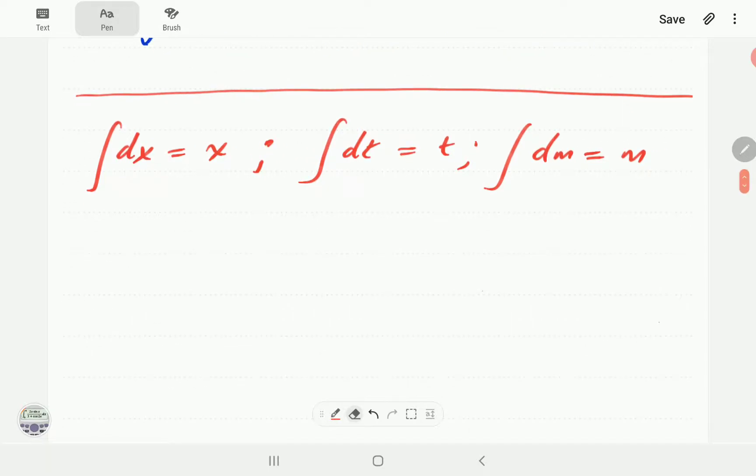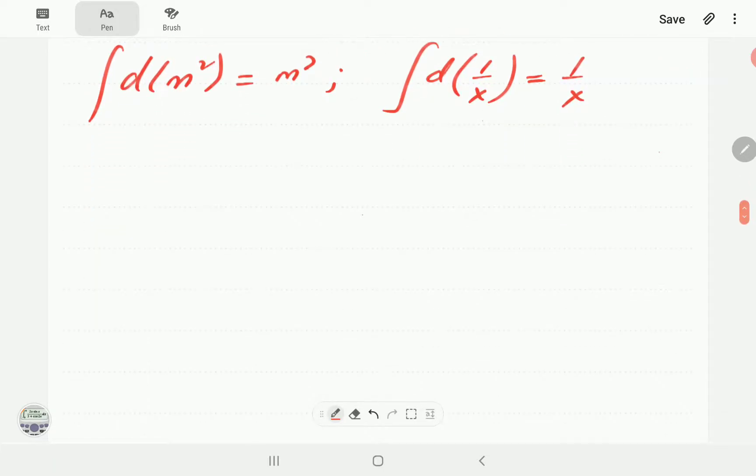So from here we can imagine that d(m squared), integral of that is just going to be m squared. And indeed d(1/x), integral of that is just going to be 1/x.